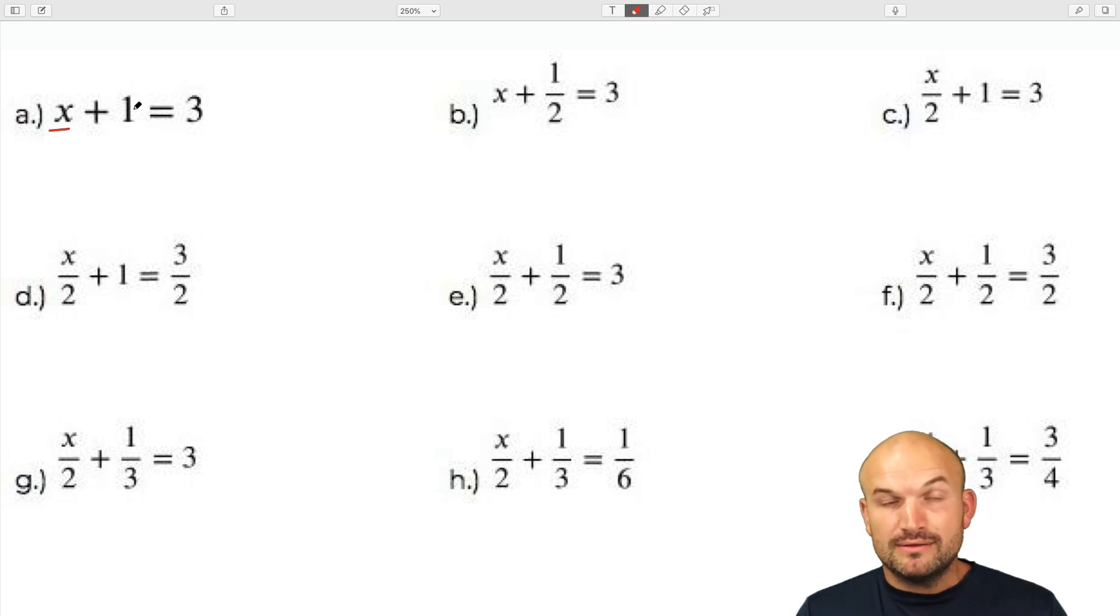So in this case, we have x plus 1. So to undo adding 1, we are going to subtract 1 and make sure you do it on both sides. So therefore, we have x equals 2. Now again, when x is equal to 2, that is going to be the value that satisfies the equation.